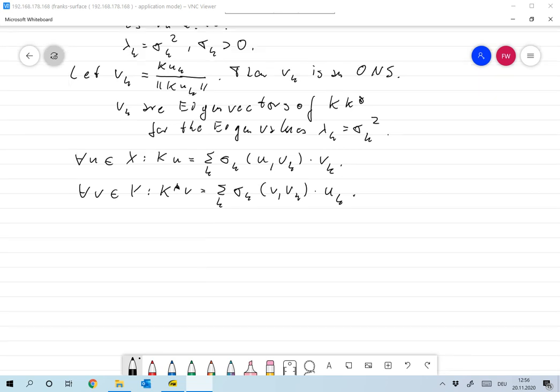I forgot to tell you this representation is called singular value decomposition. The sigma_k are the singular values of K.